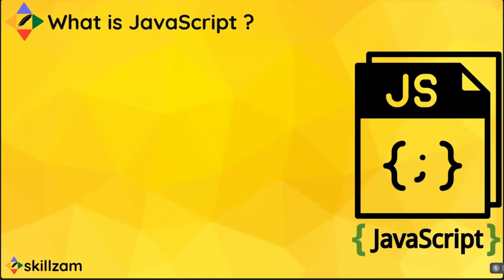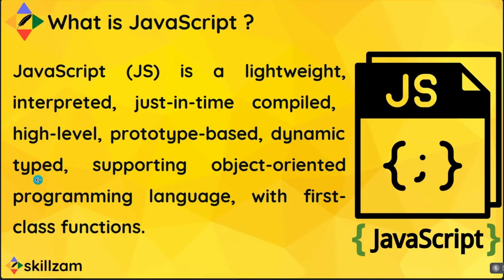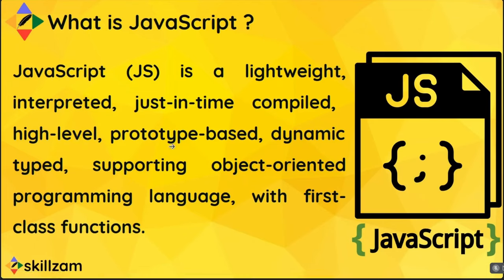Now let's understand what JavaScript actually is. If we look at a single definition statement, there are a lot of keywords: JavaScript is a lightweight, interpreted, just-in-time compiled, high-level, prototype-based, dynamically typed language supporting object-oriented programming with first-class functions. To understand what JavaScript is, we need to understand these terminologies.